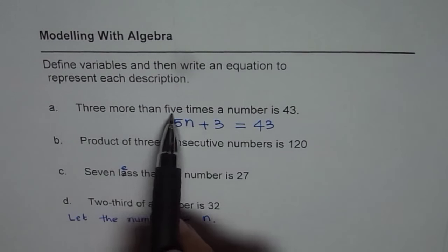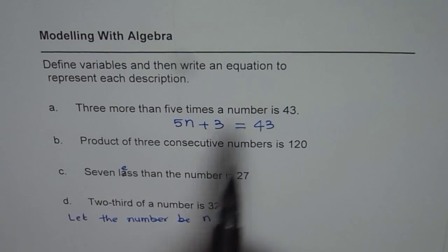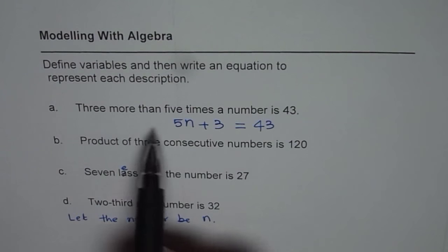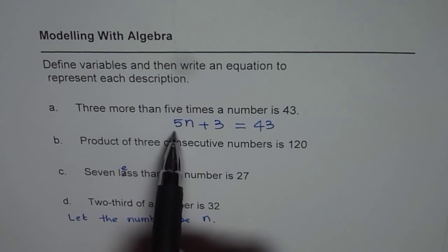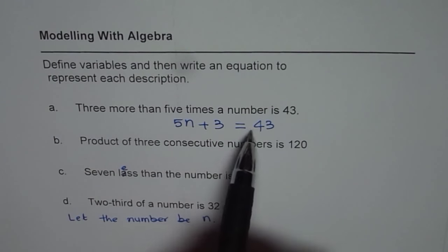3 more than 5 times a number is 43. My recommendation is not to write 3 plus 5n but to write 5n plus 3 equals to 43.